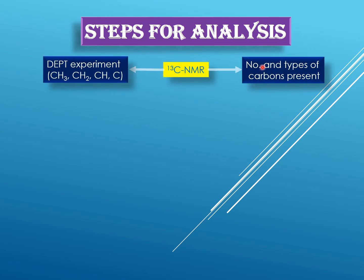Then you go for the carbon-13 NMR spectrum, which tells you about the number and different types of carbons present in the molecule. You will also perform DEPT experiments. Carbons can be of different types — CH3, CH2, CH, or quaternary carbon — and a simple broadband carbon-13 NMR spectrum won't differentiate between these. So you go for DEPT-90, DEPT-135, or DEPT-45 experiments which enable you to differentiate between CH3, CH2, CH, and quaternary carbons.